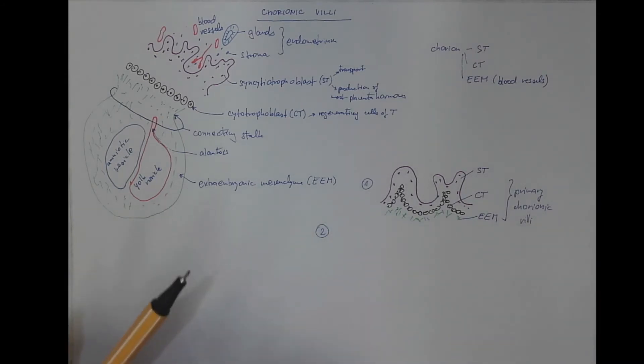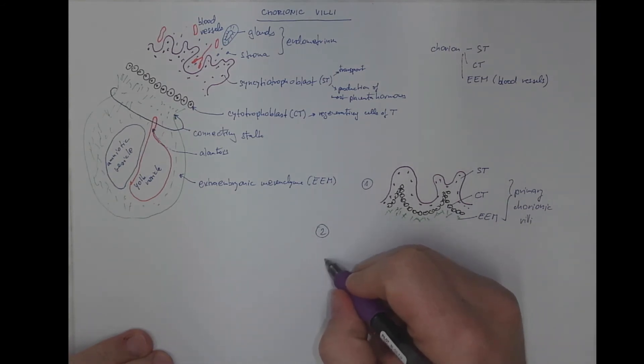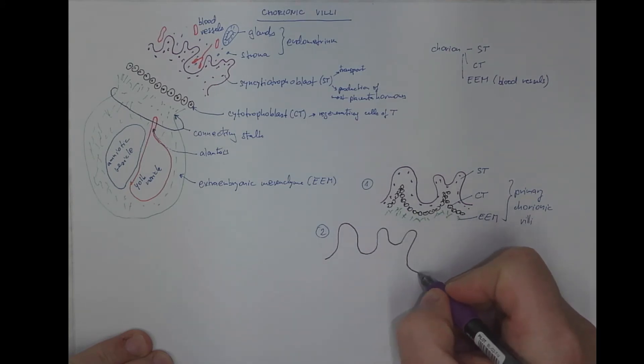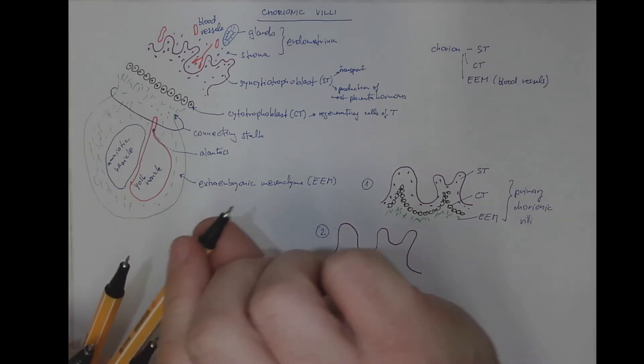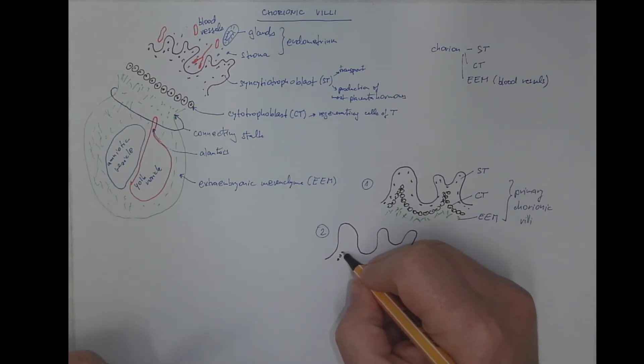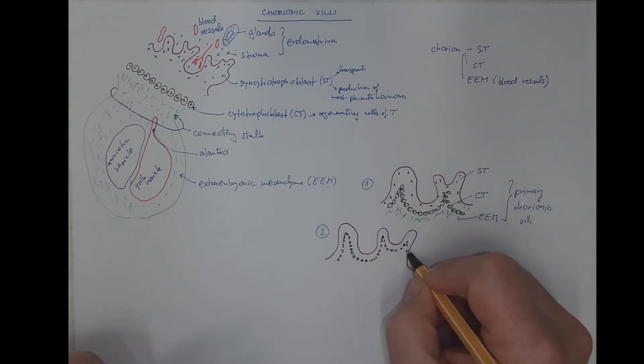That's followed by another stage where the extra embryonic mesenchyma grows into the villi. Of course also the villi increase in size and in numbers. You can see the cytotrophoblast here. But now the core of each villus contains also the undifferentiated connective tissue of the extra embryonic mesenchyma. This stage is called secondary chorionic villi.